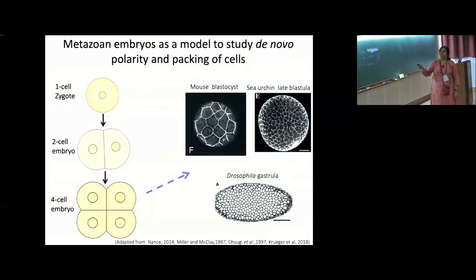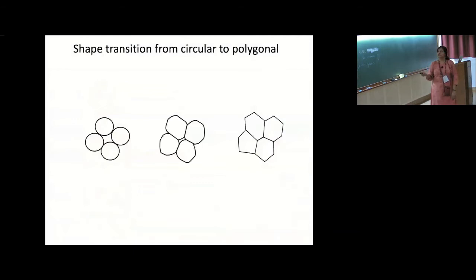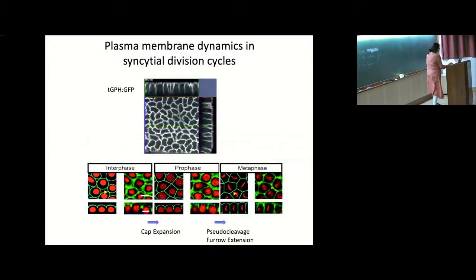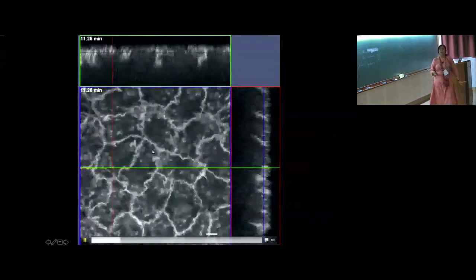The embryo per se is an interesting process where there is a classic change of shape happening from sphere to polygon — from circular to polygon — in this direction. It gives us a natural context to look at this. This kind of shape change is also happening in the case of the Drosophila embryo. This is the movie I want to show you: what we are looking at is just the membrane. The central section is the surface view — the XY view — and this section is the view inside the embryo.